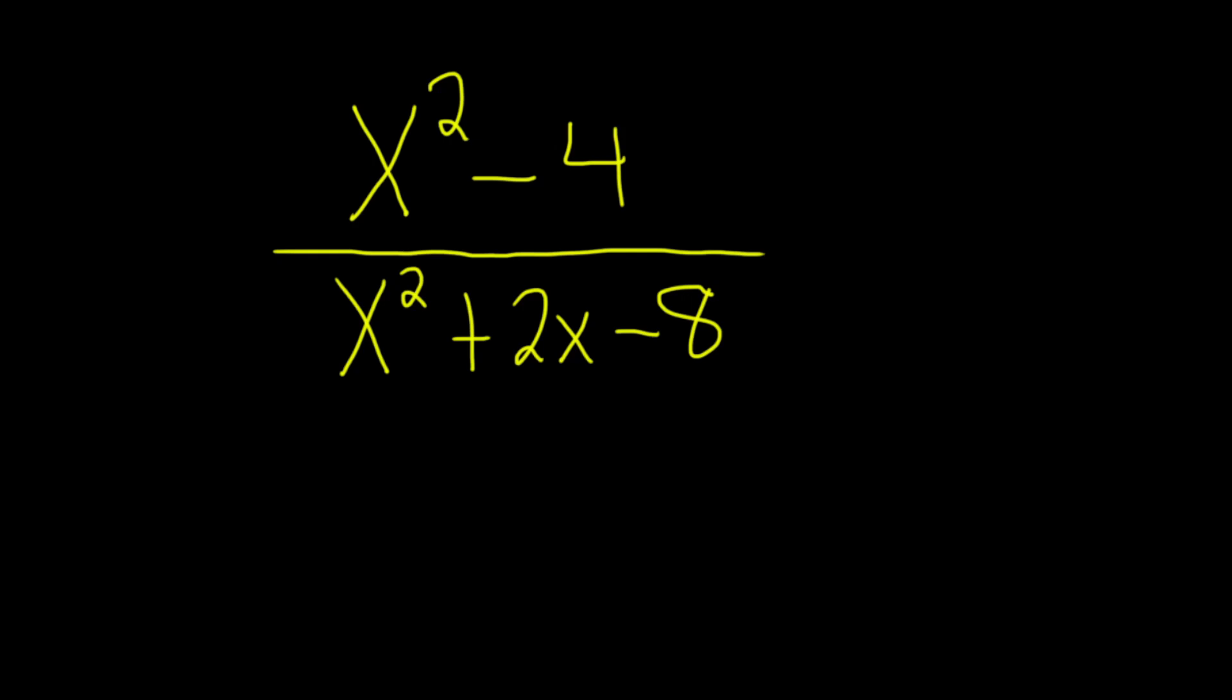Hi, we have to simplify in this problem. We have this rational expression: x squared minus four divided by x squared plus two x minus eight. Let's go ahead and see if we can clean this up. Solution.